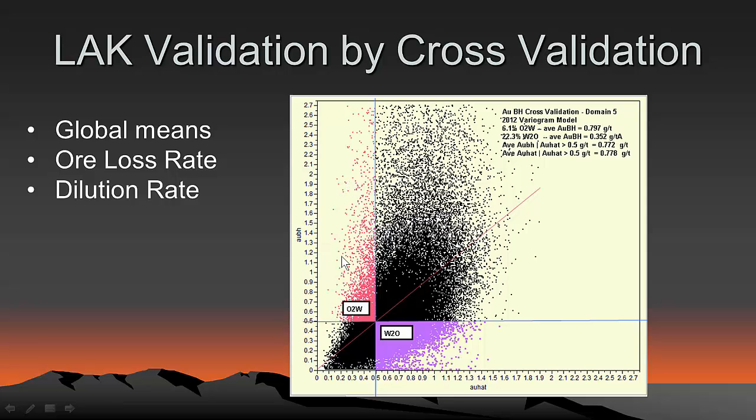Similarly, in this quadrant up here, we have a misclassification where the estimates have said, nope, it's waste. But look at the true blast hole grades and say, oh no, it's above cutoff, so it's actually ore. So this is ore to waste. So it's a misclassification that way. Obviously these are rates. So we can say, for example, we have 6.1% ore to waste. We have 22.3% waste to ore, and so on. So we can calculate that these guys in this quadrant here are correctly estimated to be above cutoff. These guys in this quadrant are correctly estimated to be below cutoff. So we can get the estimated grade of this and the true grade of this and compare and so on. So we can do that for LAK. We can do that for OK. And it'll give us a pretty good idea whether LAK is helping us, yes or no.